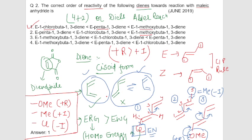The diene with more electron density will be most reactive in the Diels-Alder reaction with dienophile. So this was all about the solution of this question. I hope this would help you. Thank you.